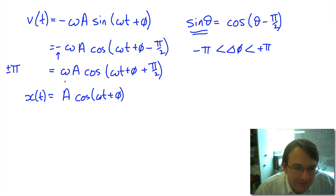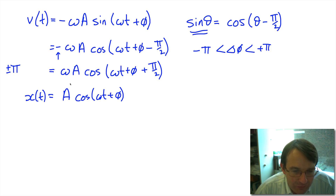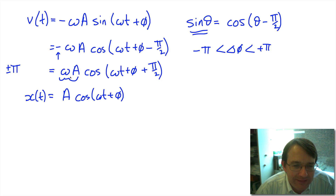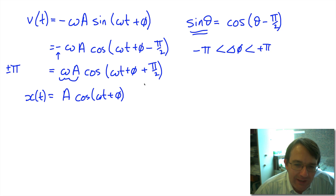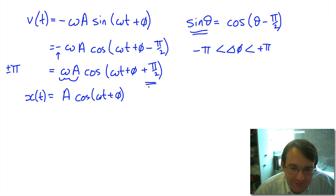Comparing the velocity expression to the displacement — which was a times cosine of (omega t plus phi) — we can see that the velocity oscillates, going positive and negative, as you'd expect. The amplitude of the velocity is omega times a, where omega is the angular frequency, equal to 2 pi times the ordinary frequency. So we have a different amplitude for the velocity and a different phase: the velocity is pi over 2 ahead of the displacement.